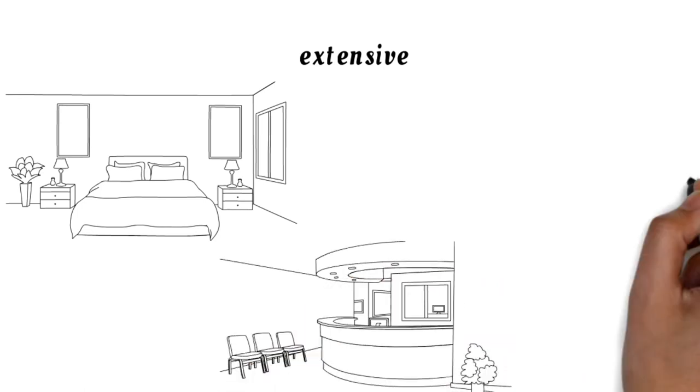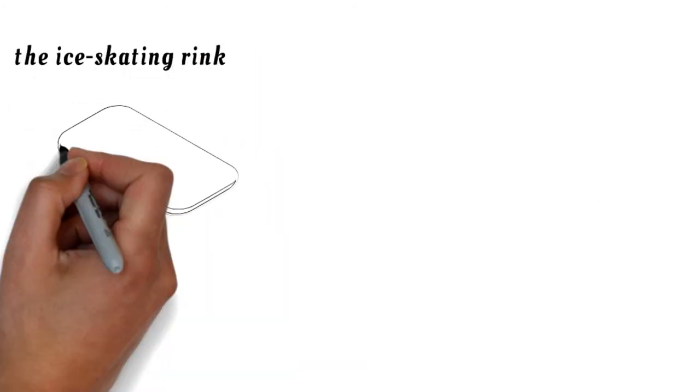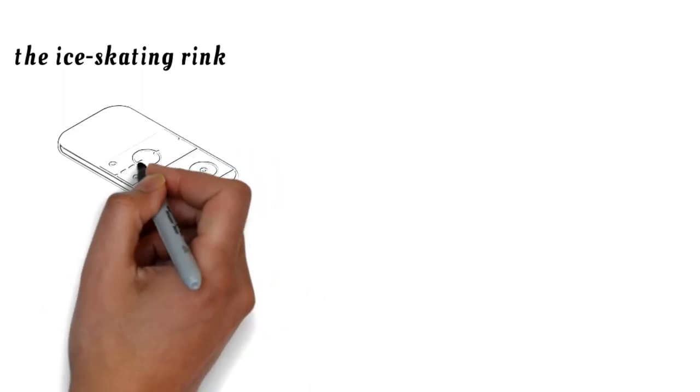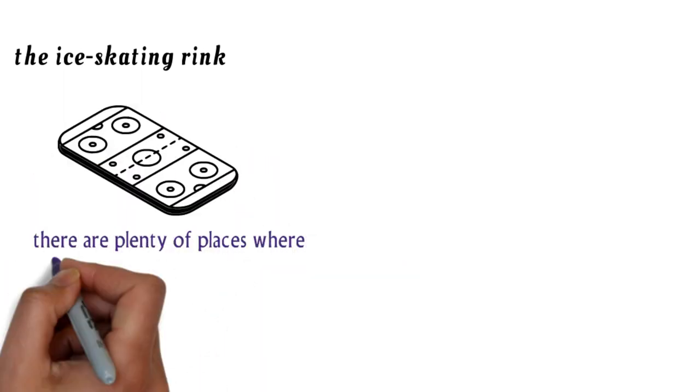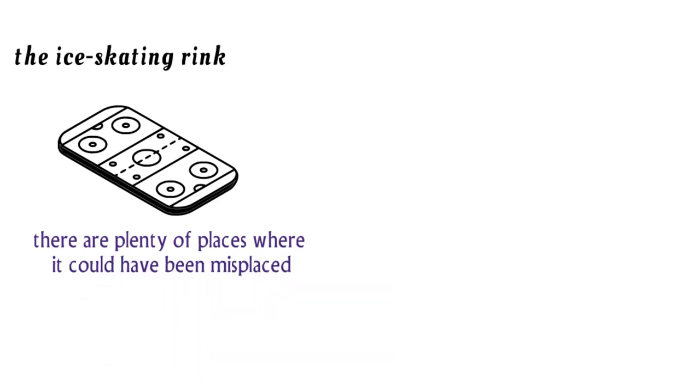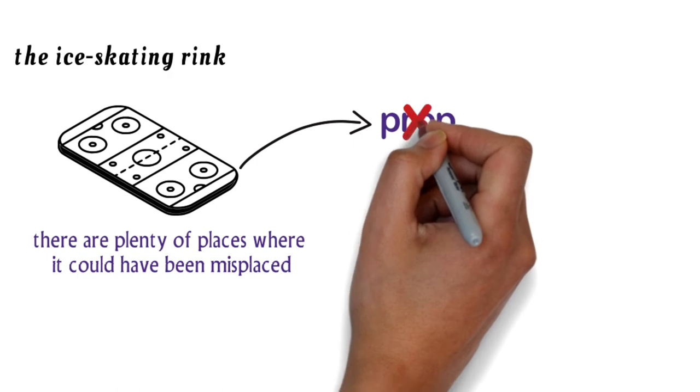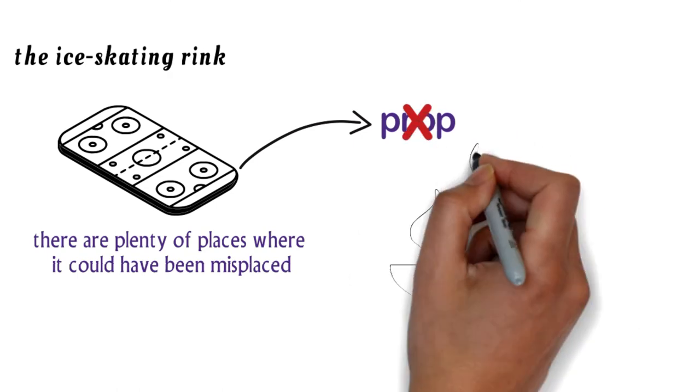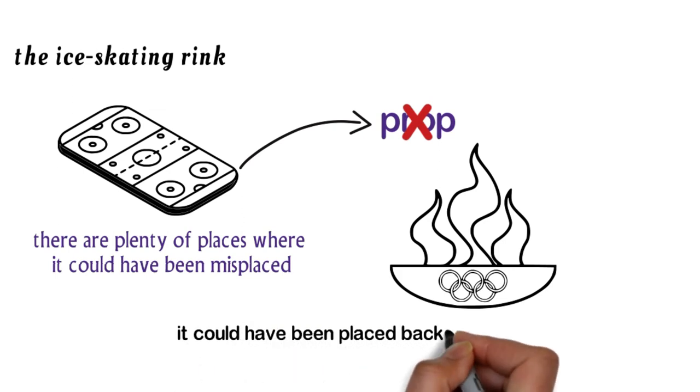Lastly, the bearer remembers visiting the ice skating rink. Similar to the gymnastic floor, there are plenty of places where it could have been misplaced. It could also have been mistaken for a prop. Most figure skaters don't use props, but anything can happen at the Olympics. It's not likely that it was left on the arena floor, but it could have been placed backstage.